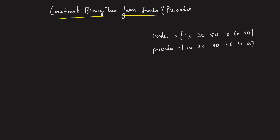Hey everyone, welcome back to the channel. We're going to solve this problem: construct a binary tree from an in-order and a pre-order traversal. If you haven't seen my previous video on whether you can construct a unique binary tree from any given two pairs of traversal, you should check it out, because if you watch that, you'll understand that when an in-order and a pre-order traversal are given, the binary tree you create will always be unique. You will be given an in-order traversal and a pre-order traversal of the same tree.